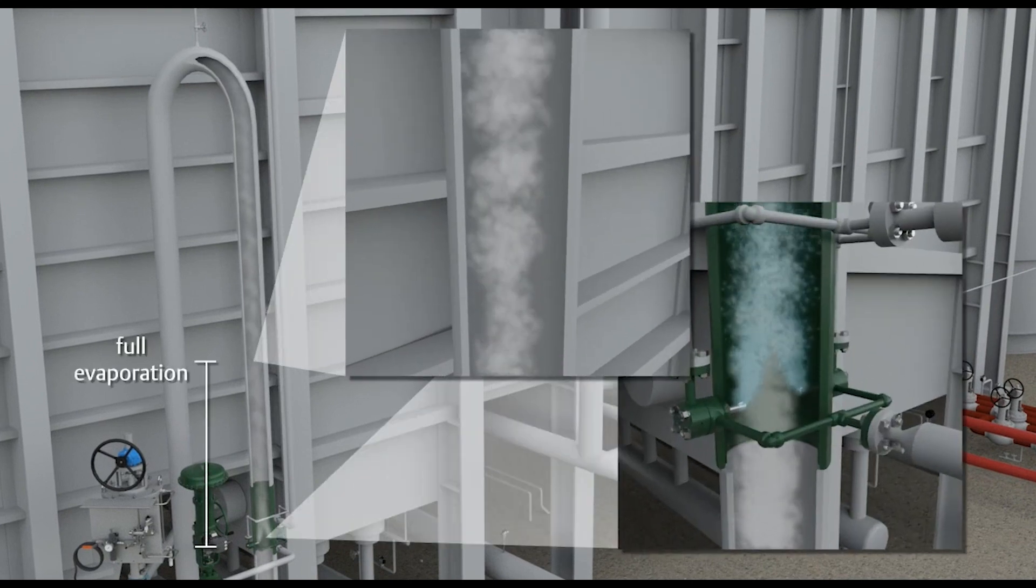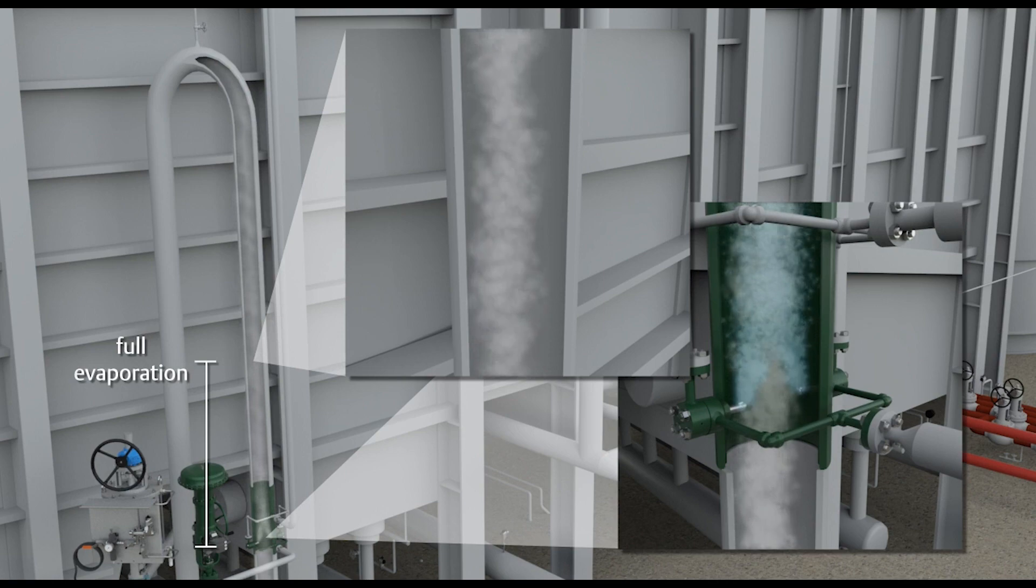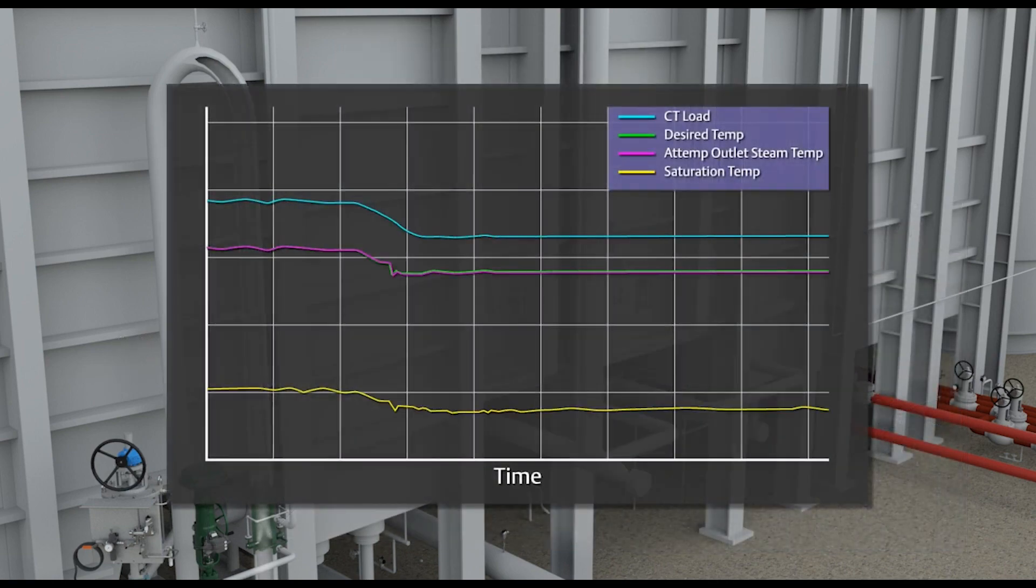The efficiency of the atomization at the AT-ST nozzle helps decrease piping wear and improves temperature control.